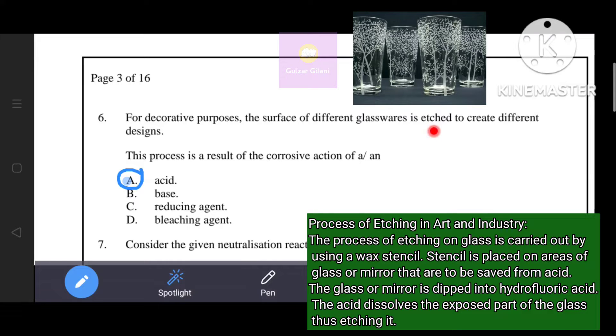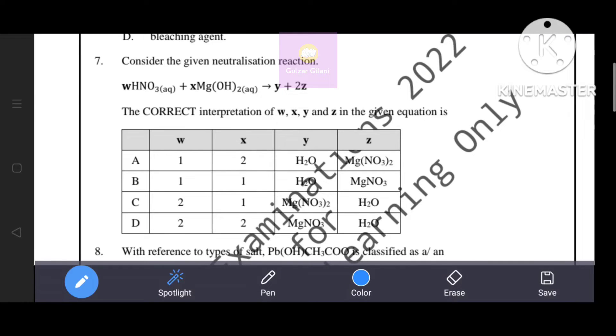As you know, the process of etching on glass is carried out by using a wax stencil. Stencil is placed on areas of glass or mirror that are to be saved from acid. The glass or mirror is dipped into hydrofluoric acid. The acid dissolves the exposed part of the glass, thus etching it. That's why option A, acid is the correct answer.